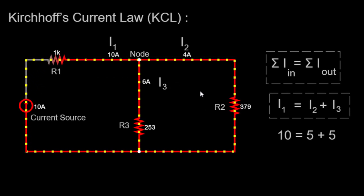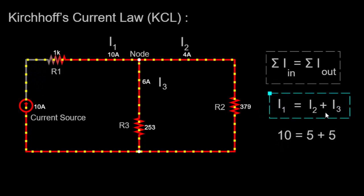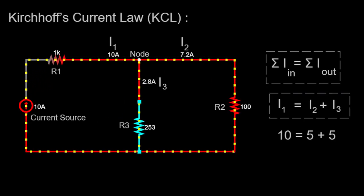In summary, Kirchhoff's Current Law states that the total current entering a node in a circuit is equal to the total current exiting the node. In our circuit simulator, we've demonstrated this principle by observing the relationship between currents I1, I2, and I3. As we change the resistance values, the sum of currents I2 and I3 always equals the current I1.